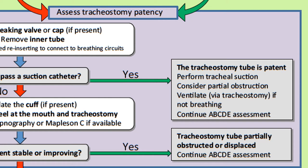A word of caution about using anything more rigid, like a gum elastic bougie. As it is relatively stiffer, there is a risk of creating a false passage in the trachea if the tracheostomy tip has been displaced. If the catheter passes into the trachea, then you can consider it as patent — that covers the airway component of your ABC assessment, and you can then continue with your assessment and ventilate via the tracheostomy if needed.